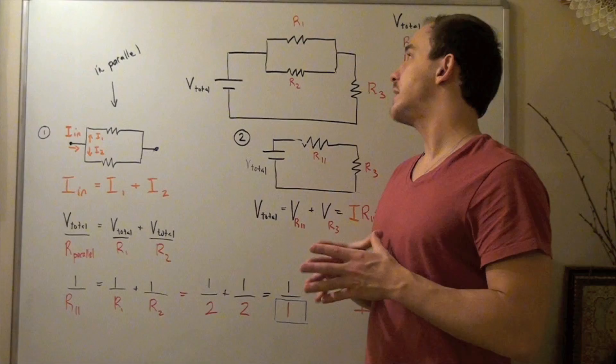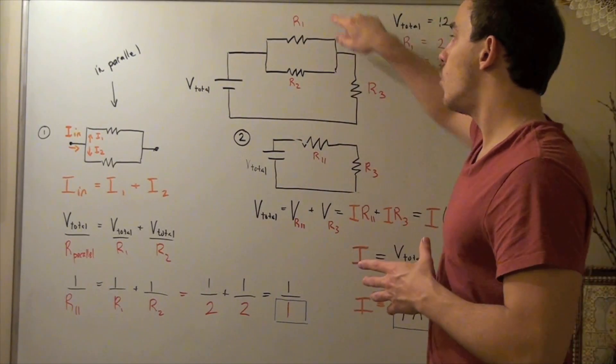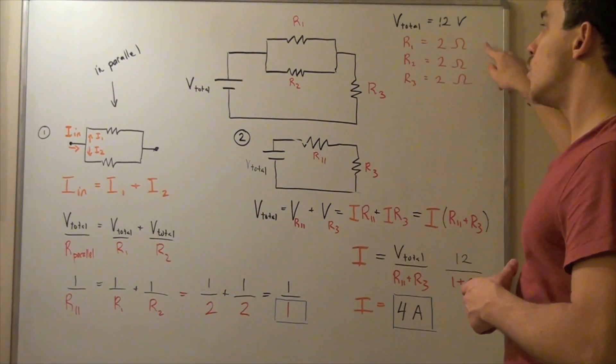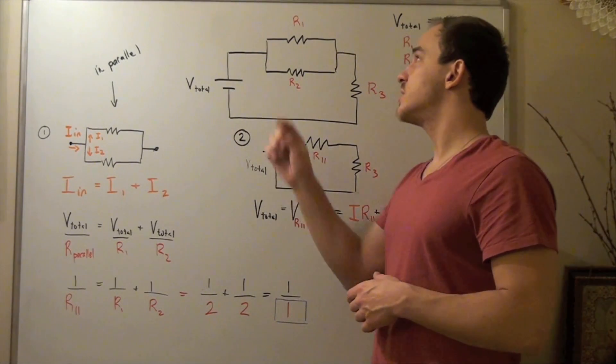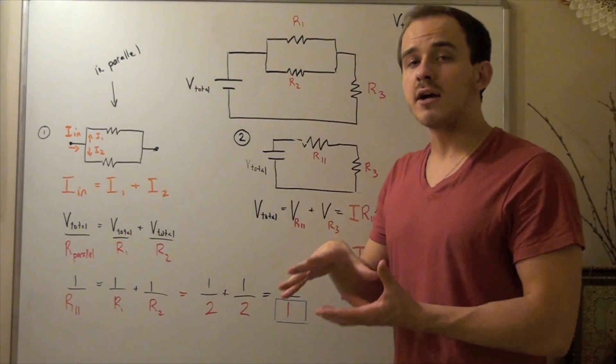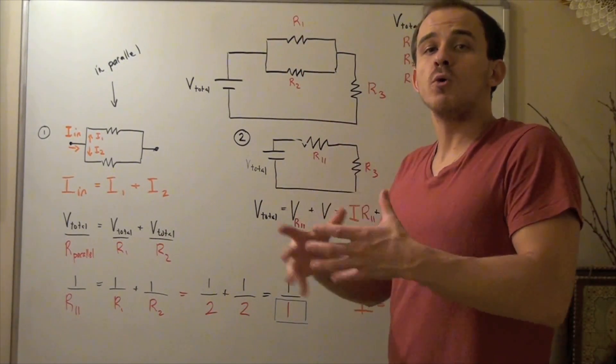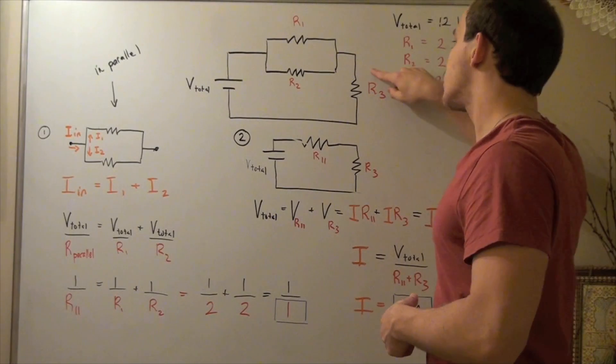Notice that we have three resistors: R1, R2, and R3, and each of these has a resistance of 2 ohms. Resistor 1 and 2 are in parallel to one another, while resistor R1 and R2 are both in series with resistor R3.